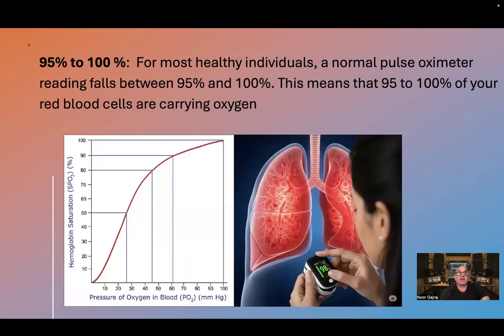For most healthy individuals, a normal pulse oximeter reading falls between 95 and 100%. This means that 95 to 100% of your red blood cells are carrying oxygen.